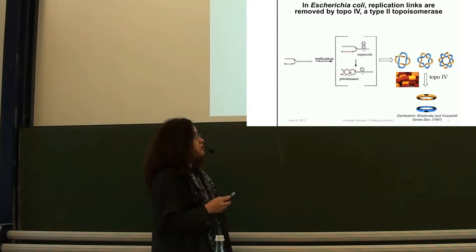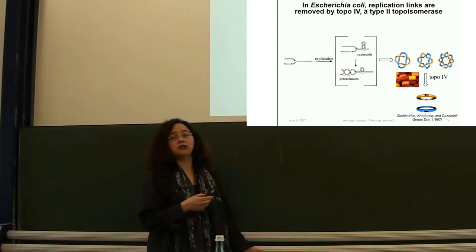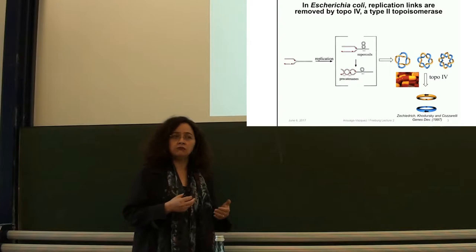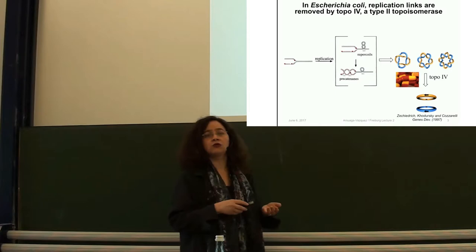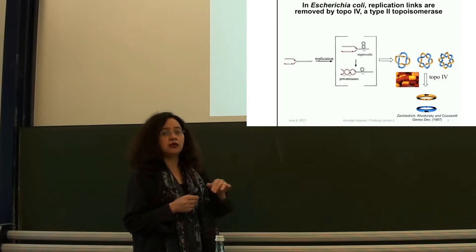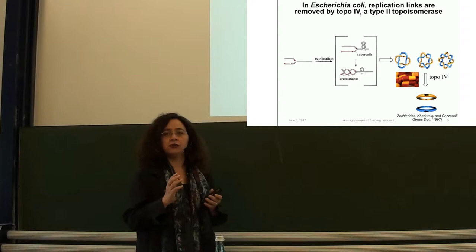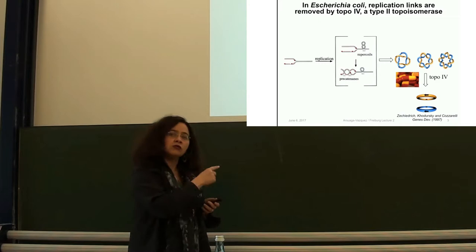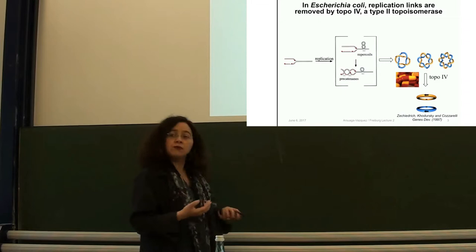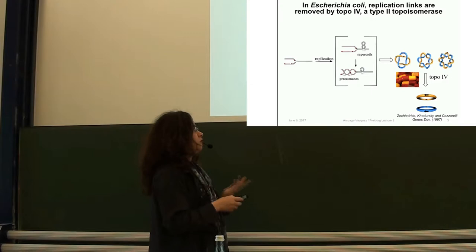What happens if you use this drug and it doesn't work? Is it because the drug is not going into the cell? Or is it that the drug is going in, it's doing its job, it's inhibiting the topoisomerase, and yet the cells still survive? If that's true, then how are they surviving? Who is untangling — decatenating or unlinking — the DNA? There must be other processes that could rescue the cell from imminent death when the topoisomerase doesn't work.